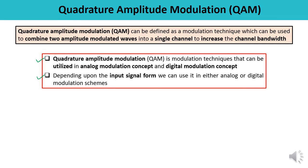Quadrature amplitude modulation can be defined as a modulation technique which can be used to combine two amplitude modulated waves into a single channel. This is a very important point — it can be combined into a single channel so that the channel bandwidth can be increased.